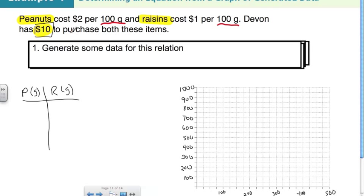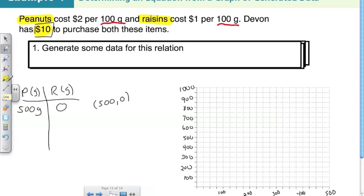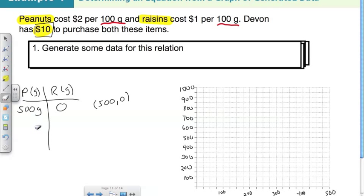The easiest route is to start by asking: how many peanuts can I have if I buy zero grams of raisins? If I spend no money on raisins, I spend all $10 on peanuts. At $2 per 100 grams, 2 goes into 10 five times, giving 500 grams of peanuts. That point is represented as (500, 0) — the x-intercept, the point at which it hits the domain axis.